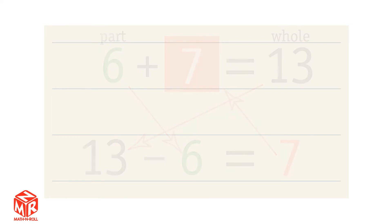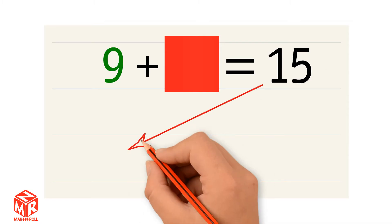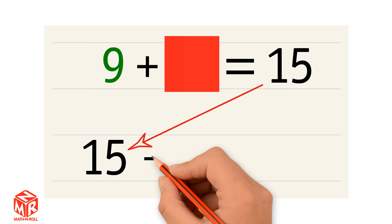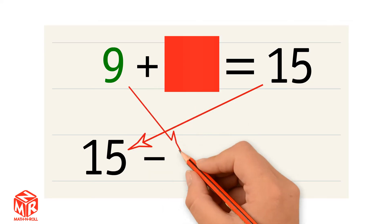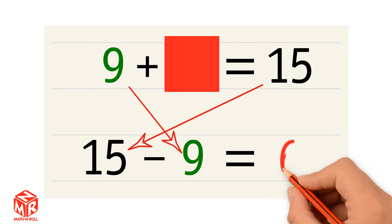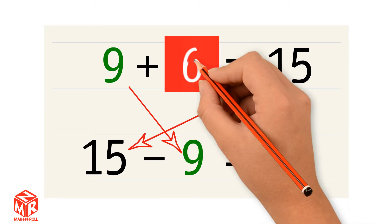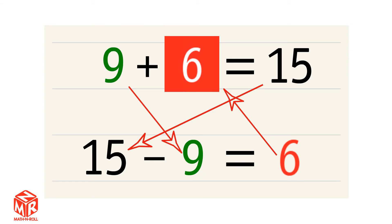Let's try another example. 9 plus an unknown number equals 15. We can find the unknown number by taking the whole, 15, and subtracting the part that we know, 9. So 6 is our unknown number. 9 plus 6 equals 15 and 15 minus 9 equals 6 are related facts.